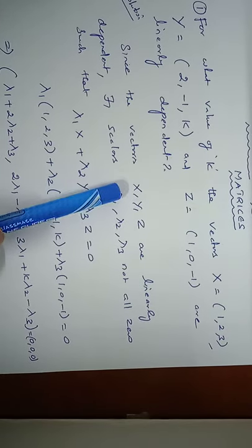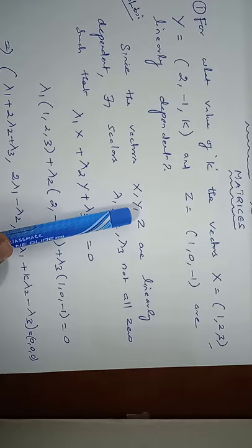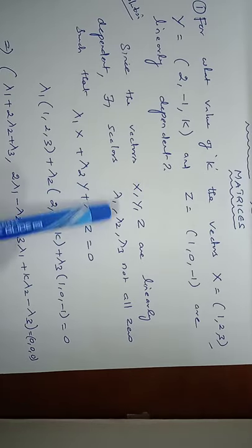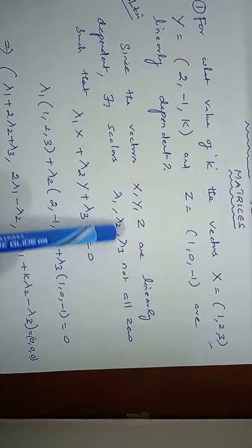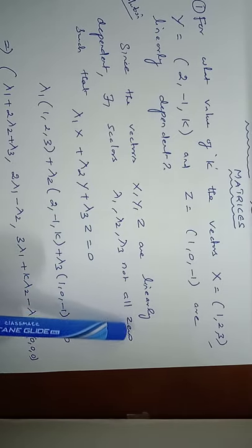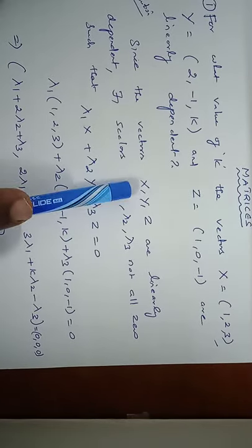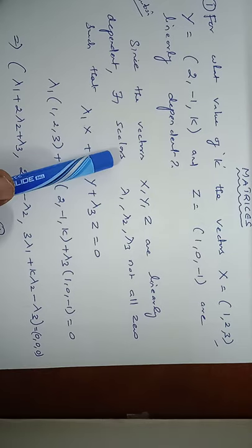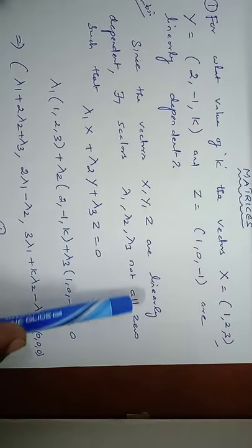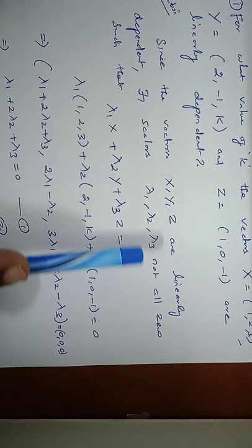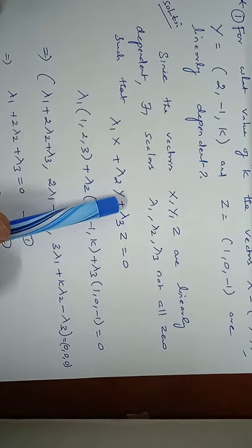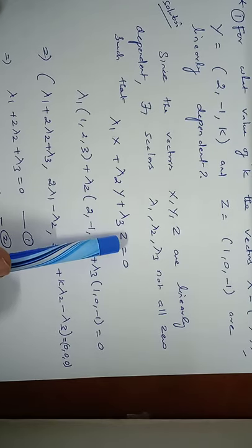We consider the definition of linearly dependent: Lambda 1, Lambda 2, Lambda 3 are scalars that are not all zero. Since the vectors X, Y, Z are linearly dependent, there exist scalars Lambda 1, Lambda 2, Lambda 3, not all zero, such that Lambda 1·X + Lambda 2·Y + Lambda 3·Z = 0.